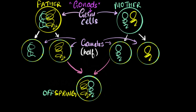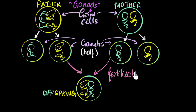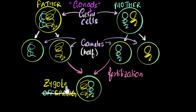Before winding up the video, let me tell you some technical names. This process where the gametes fuse with each other, we technically call it fertilization. And after the fusion, the new cell that is formed — we don't call it the offspring cell — there's a technical name for that: we call it the zygote. You'll keep hearing these names over and over again in future videos.